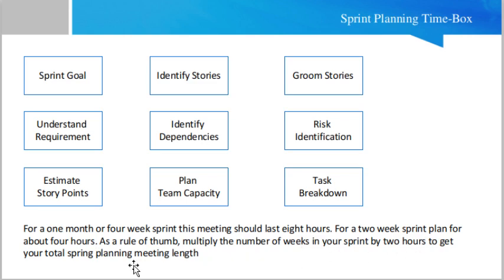A sprint planning meeting consists of: defining the sprint goals, understanding the requirements, estimating story points, identifying the stories, identifying the dependencies, planning the team capacity, grooming stories, risk identification, and task breakdown structure. These are the key things that a sprint planning meeting consists of.